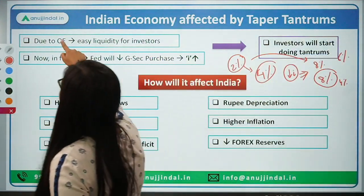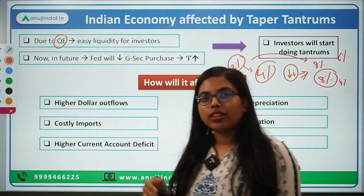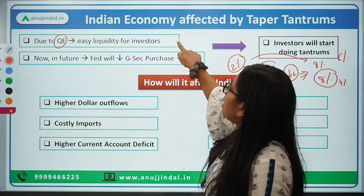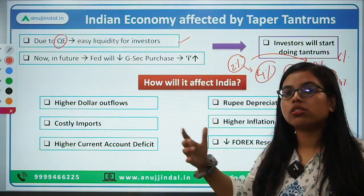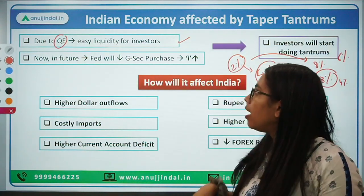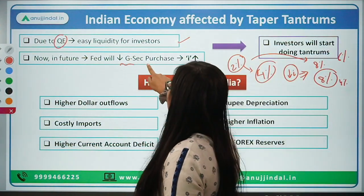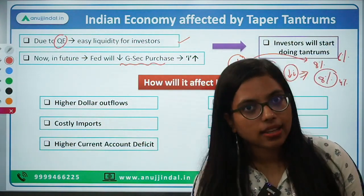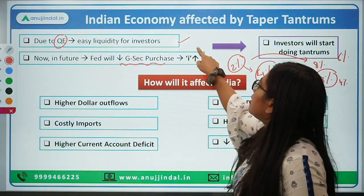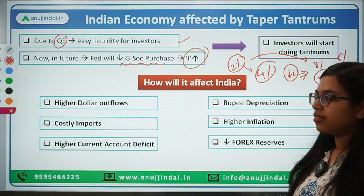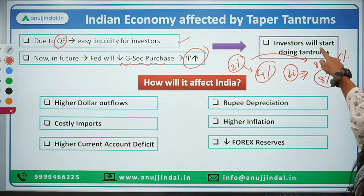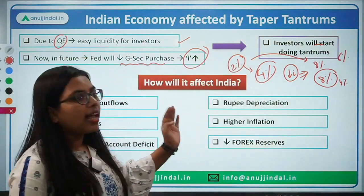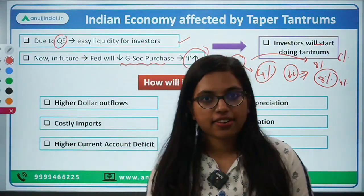So due to quantitative easing, there was easy liquidity for investors — money was available at a very cheap rate. And now in future, because of the announcement of Fed tapering, the Fed will reduce government security and bond purchases, which will increase the rate of interest. So investors will start showing tantrums — this is known as Fed tapering and taper tantrums.